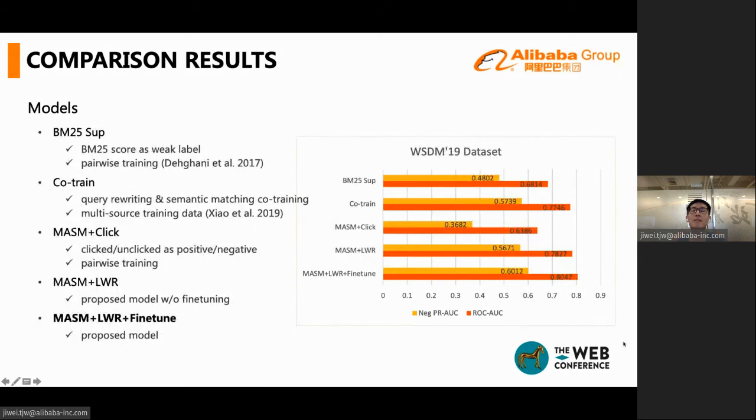We also compare with another e-commerce relevance dataset used in previous paper. The paper proposed the co-training framework for the e-commerce relevance task, and co-train is the previous state of the art. The co-train method also explored using weak supervision to train a good e-commerce relevance model. Our model can outperform co-training by about 3 points AUC scores.